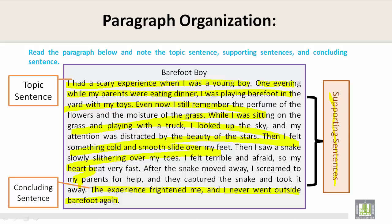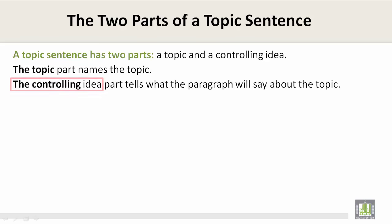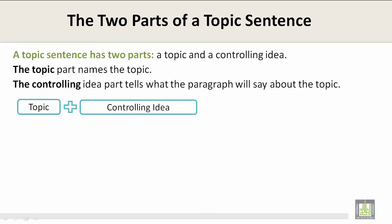The concluding sentence restates the topic sentence, but in a different way. A topic sentence has two parts: a topic and a controlling idea. The topic part names the topic, and the controlling idea part tells what the paragraph will say about the topic. For example, let's take a look at this formula: topic plus controlling idea equals a sentence.